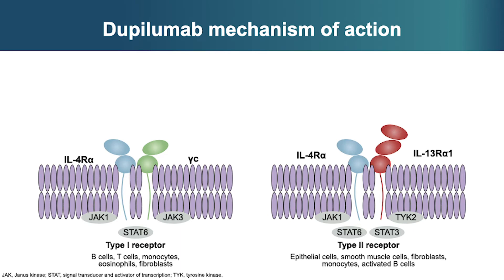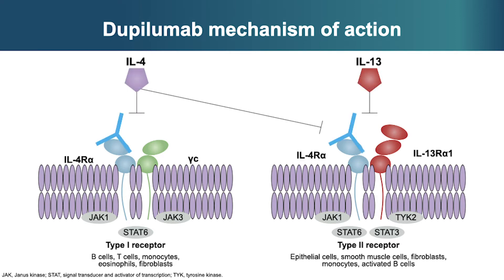Dupilumab is a fully human monoclonal antibody directed against the IL-4 alpha component of the type 2 receptor, and it inhibits signaling of both IL-4 and IL-13. The efficacy of dupilumab in several settings of allergic, atopic, type 2 diseases has been shown, and we've noted the importance of IL-4 and IL-13 as key initiators of type 2 inflammation. Dupilumab has shown efficacy in pediatric and adult patients with atopic dermatitis, asthma, and chronic sinusitis with nasal polyps.